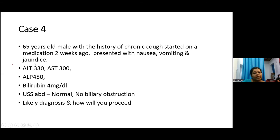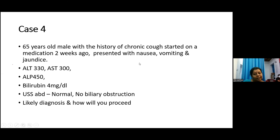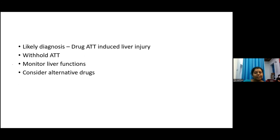Case four: a 65-year-old male with a history of chronic cough, started on medication two weeks ago, presented with nausea, vomiting, and jaundice. Liver function tests: ALT 330, AST 300, alkaline phosphatase 450, bilirubin 4 mg/dL. Ultrasound abdomen normal, no biliary obstruction. The likely diagnosis is anti-TB drug-induced liver injury — the patient with chronic cough was started on anti-tuberculosis medications, and the transaminase and LFT elevation is due to drug-induced liver injury.